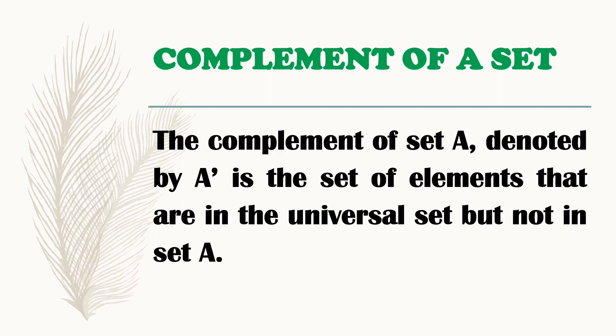What is complement of a set? The complement of set A, denoted by A apostrophe, is the set of elements that are in the universal set but not in set A. Ibig sabihin, yung elements na wala dun sa set A na nasa universal set natin, that is what we call the complement of set A. So kung titignan natin, meron tayong apostrophe dun. So that is a complement of set A.